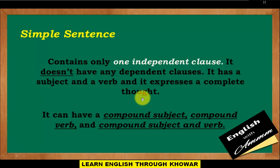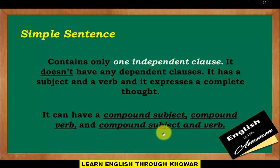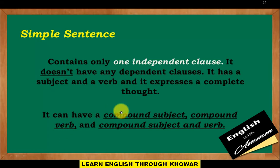A simple sentence can have a compound subject, a compound verb, or a compound subject and verb. Compound subject means two subjects together. Compound verb means two verbs together. Compound subject and verb means two subjects and two verbs together. Now let's look at example sentences.